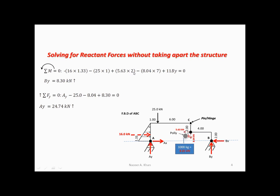For the vertical component, we have 8.04 times the distance all the way here — that distance is given by 1 plus 6, which is 7. The rotation is negative, so we have minus 8.04 times 7. The last moment is the moment by BY. It will rotate counterclockwise, which means it will be positive. The perpendicular distance to the line of action will be 6 plus 1 is 7, plus 4 is 11. So we'll have plus 11 BY — and that term is right there.